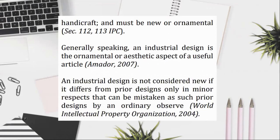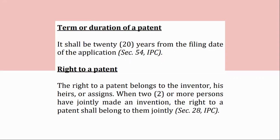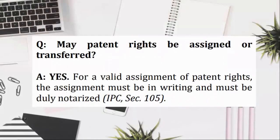Term or duration of a patent: 20 years from the filing date of the application, Section 54, IPC. Right to a patent: the right to a patent belongs to the inventor, his heirs, or assigns. When two or more persons have jointly made an invention, the right to a patent shall belong to them jointly, Section 28, IPC. May patent rights be assigned or transferred? Yes. For a valid assignment of patent rights, the assignment must be in writing and must be duly notarized, IPC, Section 105.